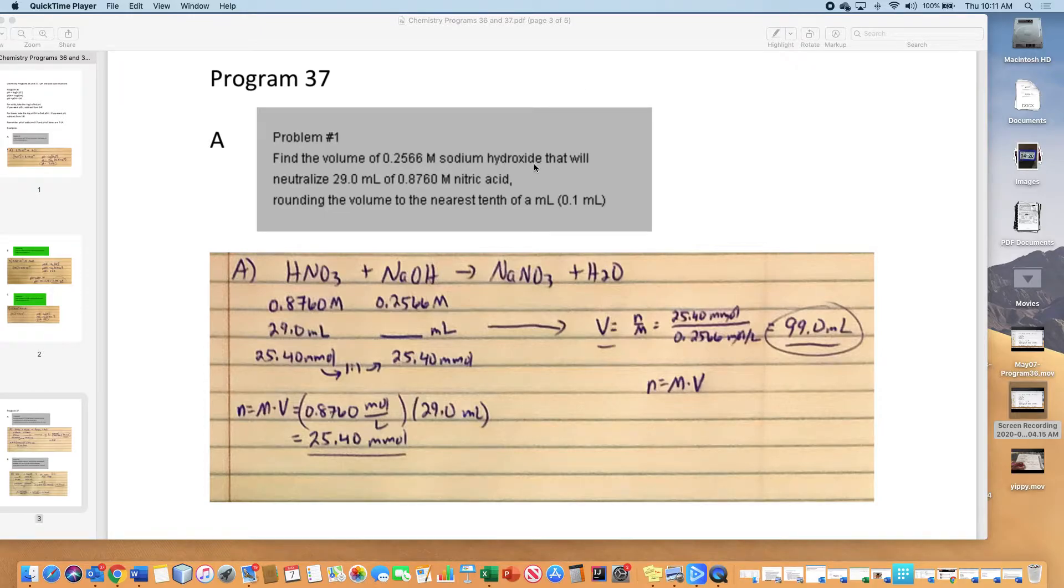What volume of molar sodium hydroxide will neutralize 29 milliliters of 0.8760 molar nitric acid? Sodium hydroxide and HNO3, nitric acid, form a salt and water. For this program, problems one through five are all one-to-one ratios because they are 1H and 1OH. Problem six changes to a different acid and base. We'll see that later. But for these first two examples, it's going to be a one-to-one ratio, which is very easy.